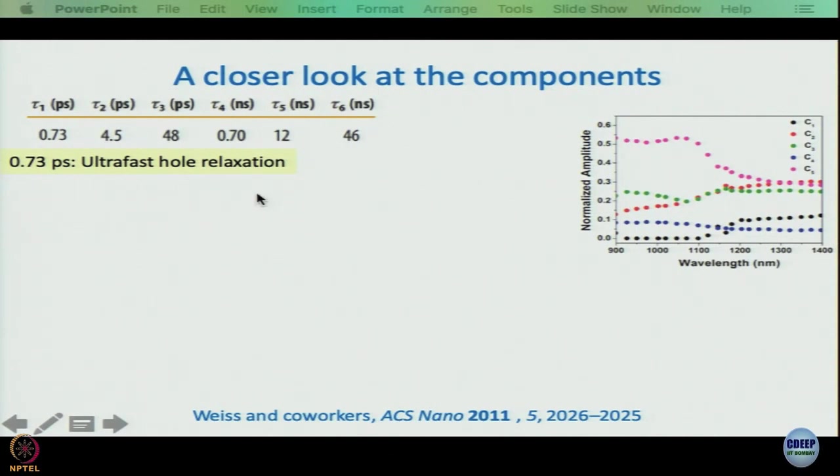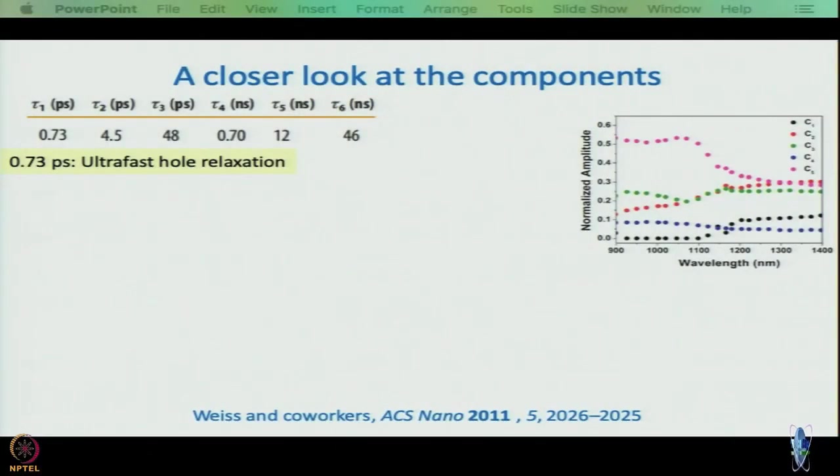The 0.73 picosecond component is ascribed to ultrafast hole relaxation. Hole relaxation means the hole is initially in one of the lower levels of the valence band and floats up to the highest valence band level. Electron relaxation means the electron, initially at a higher energy level in the conduction band, sinks down to the lowest conduction band level. This 0.73 ps is associated with ultrafast hole relaxation because in the NIR lower-energy side — dominated by holes — this component is observed to a greater extent.